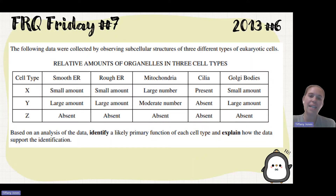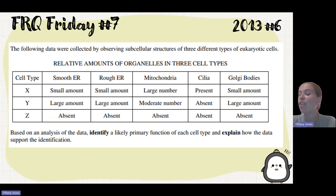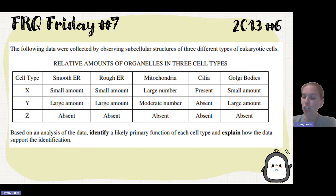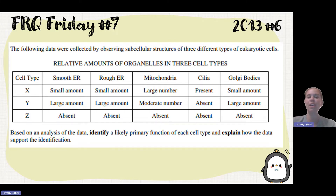They tell us that we have data collected from three different types of eukaryotic cells. It is important to make sure you recognize that we're looking at eukaryotic cells. Based on the analysis of the data, we need to identify a likely function of the cell and explain how the data supports that identification.